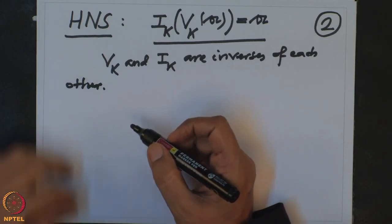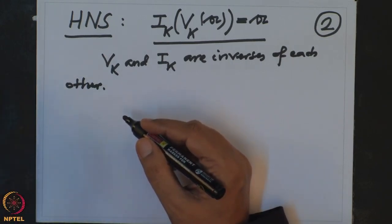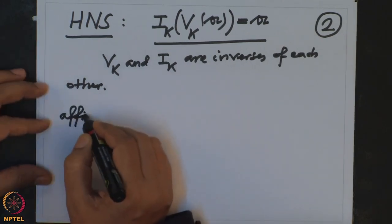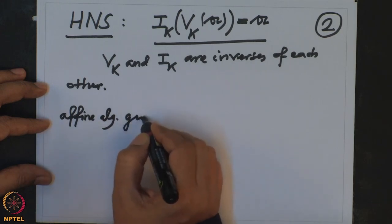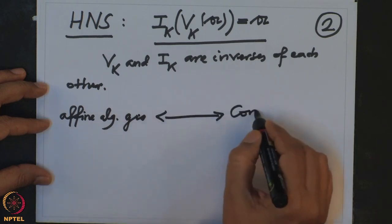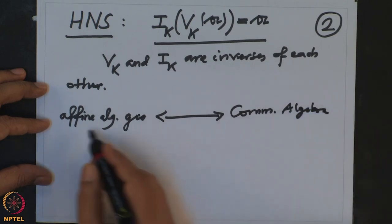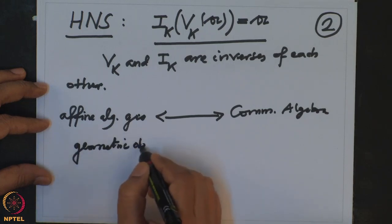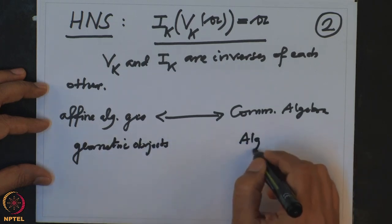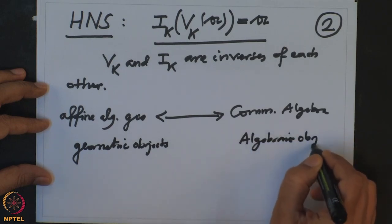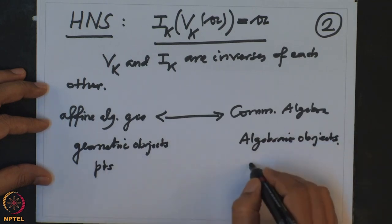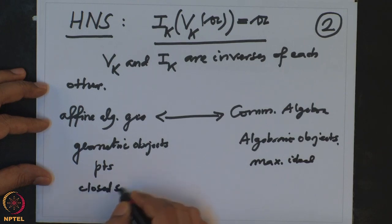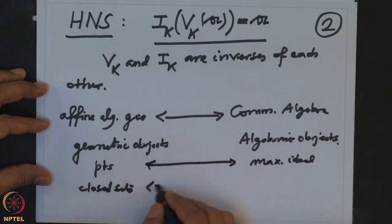One can study algebraic sets by using ideals in the polynomial ring in N variables — that is commutative algebra. So here, affine algebraic geometry is studied via commutative algebra. Points in K^N correspond to maximal ideals, and closed sets correspond to radical ideals.